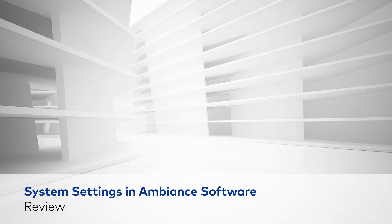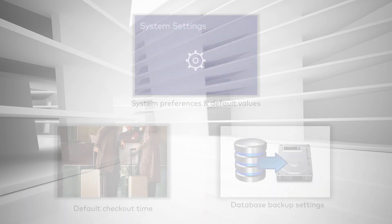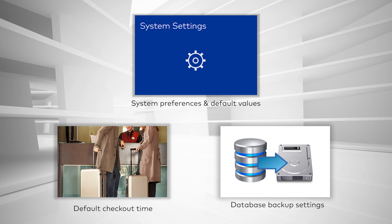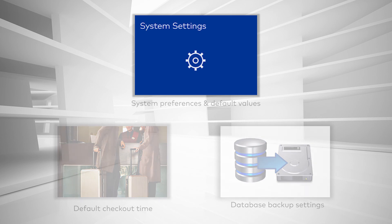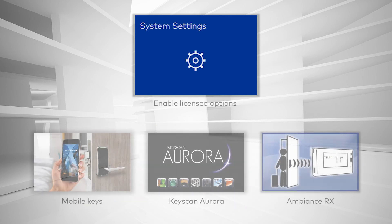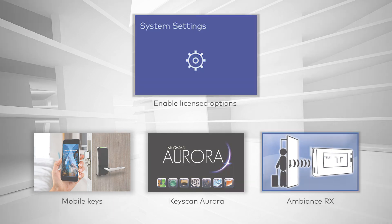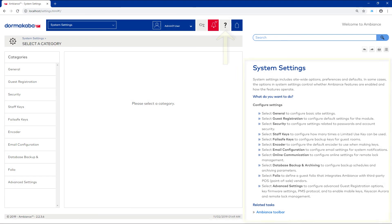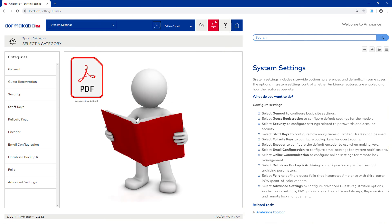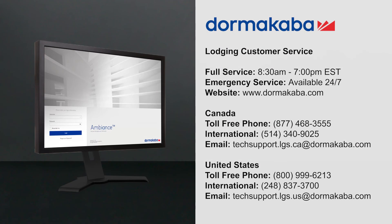Review. In this video, we saw how to use the System Settings module to define system preferences and default values for global options. We also learned how to turn on licensed features in the advanced settings category. For more information on this or other Ambience topics, use the online help or consult the Ambience user guide. For customer service, contact Dormacaba or visit us online at Dormacaba.com. Thank you.